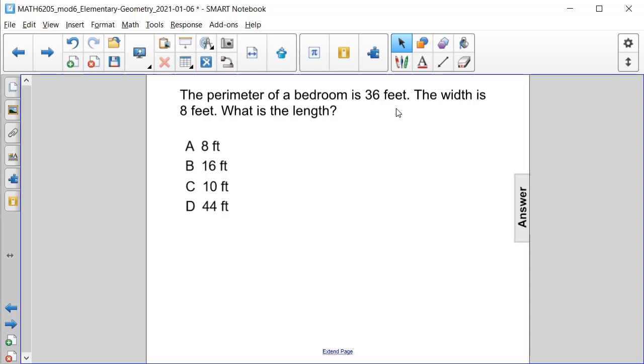The perimeter of a bedroom is 36 feet. The width is 8 feet. What is the length? Let's start off by drawing a picture to represent the problem that's in front of us.